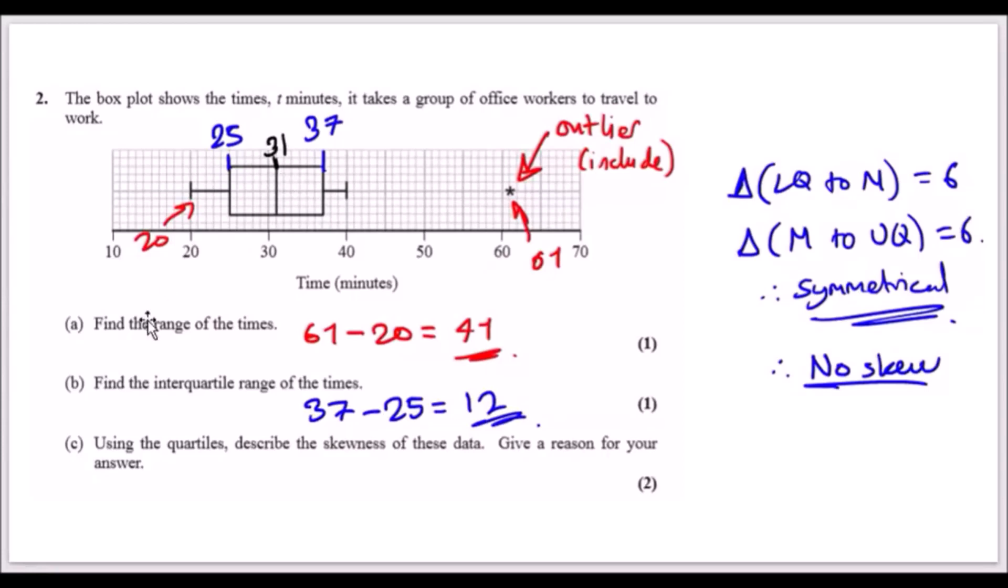Part a: find the range of the times. The range would be the highest absolute value, which is 61, minus the lowest possible value, which is 20, giving you 41. Part b: find the interquartile range of these times. This is the difference between the upper quartile, which is 37, and the lower quartile, which is 25. This should give you 12.